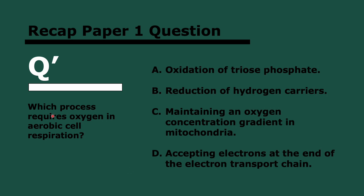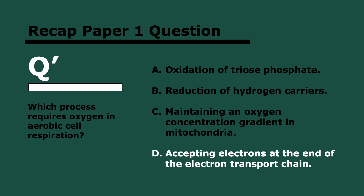Finally, which process requires oxygen in aerobic cell respiration? The answer is the accepting of electrons at the end of the electron transport chain — remember, otherwise electrons accumulate, you can't oxidize NADH, and you resort to anaerobic respiration. If you have any questions, leave them in the comments. If you've enjoyed this video, please subscribe — it helps a lot. I'll see you next week for photosynthesis, and thank you everyone. Have a nice week.